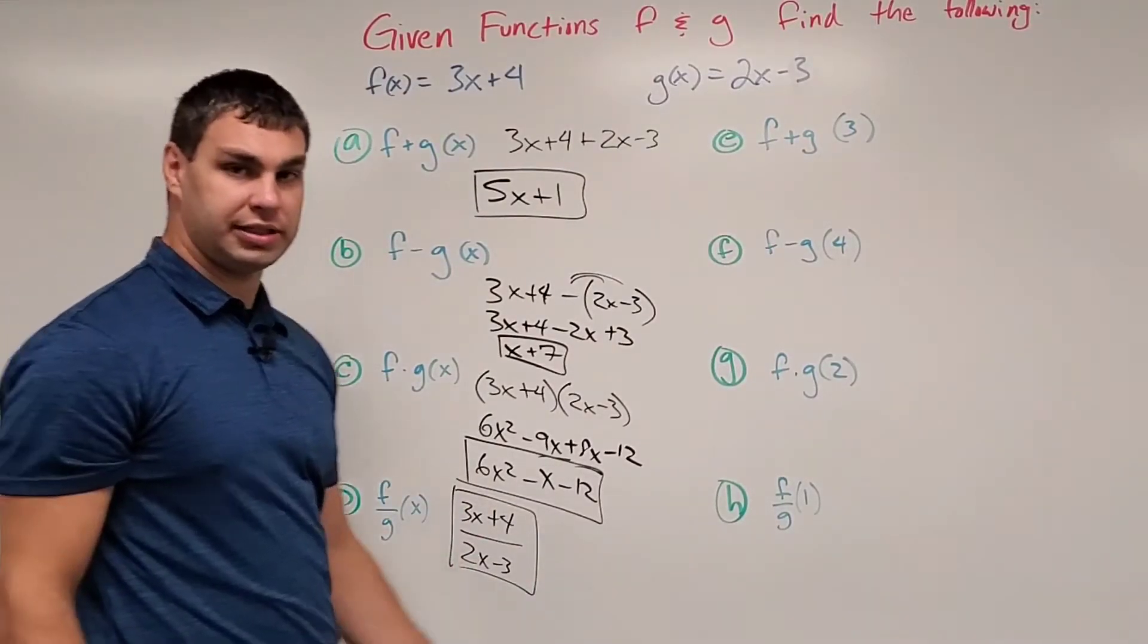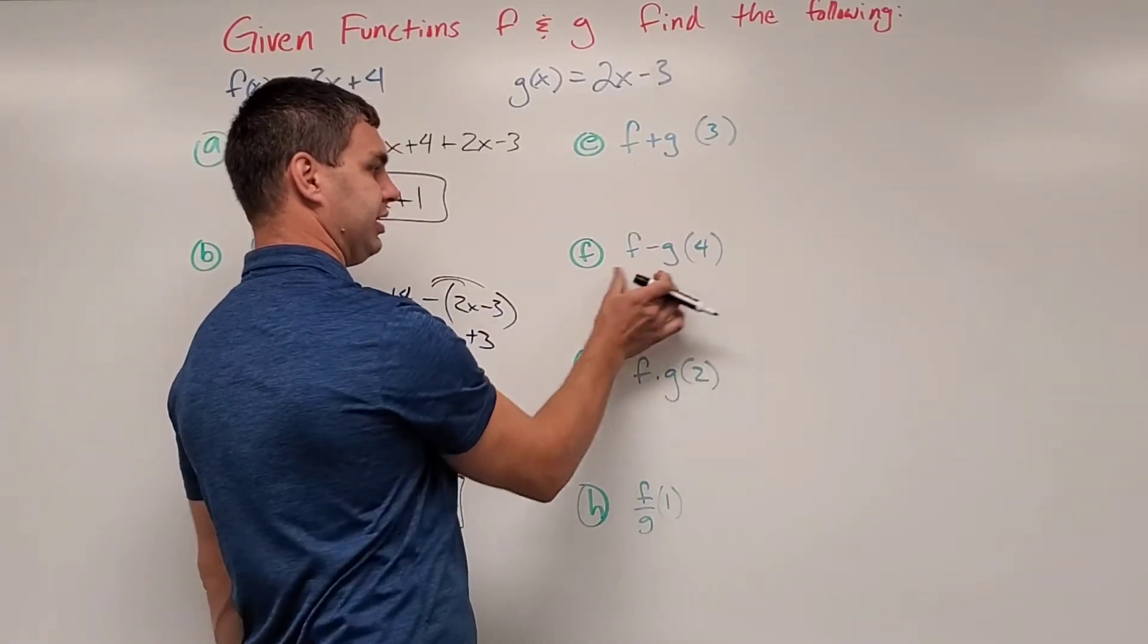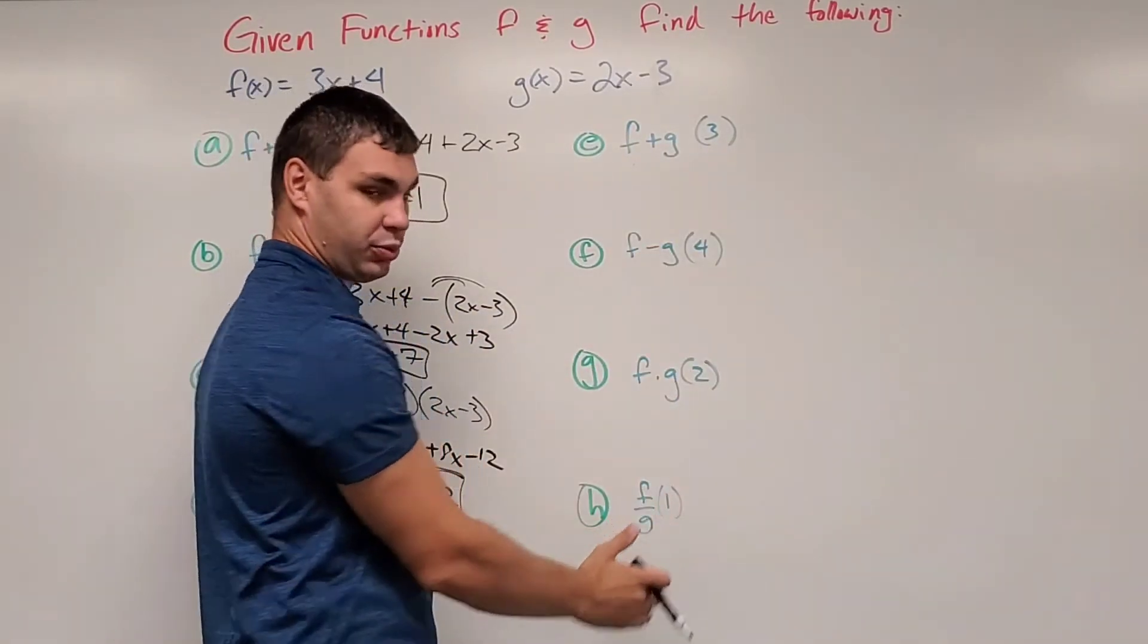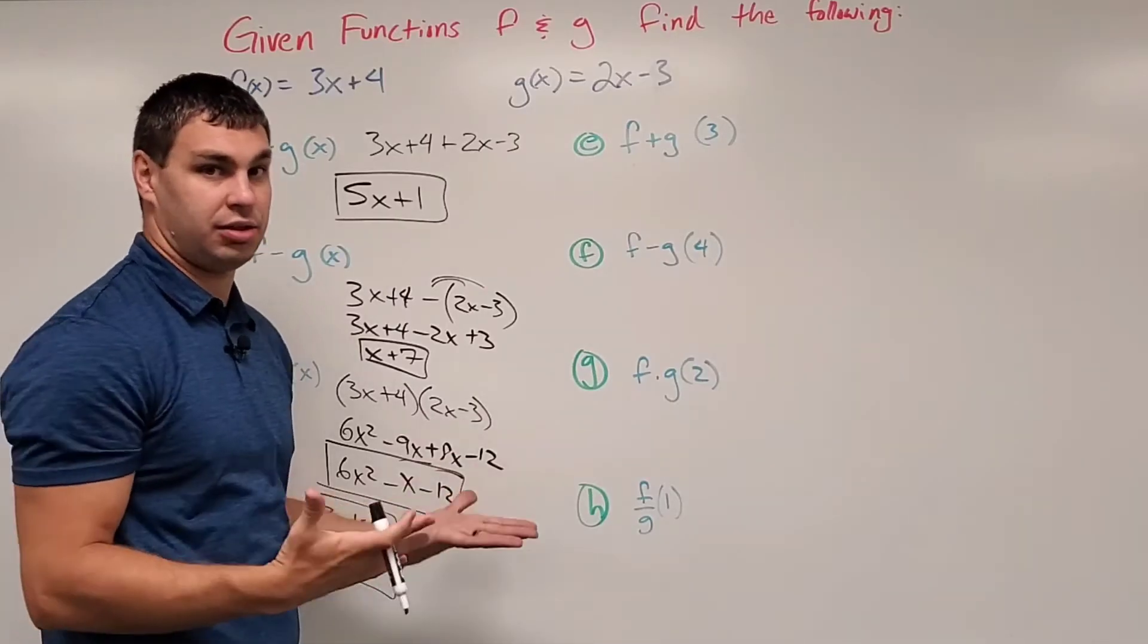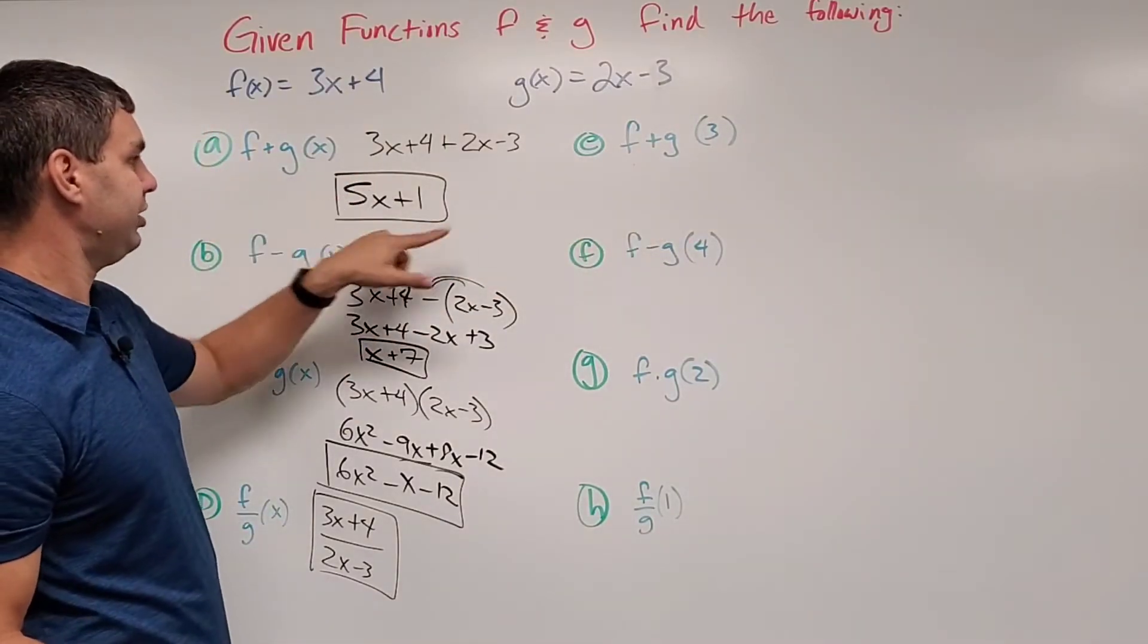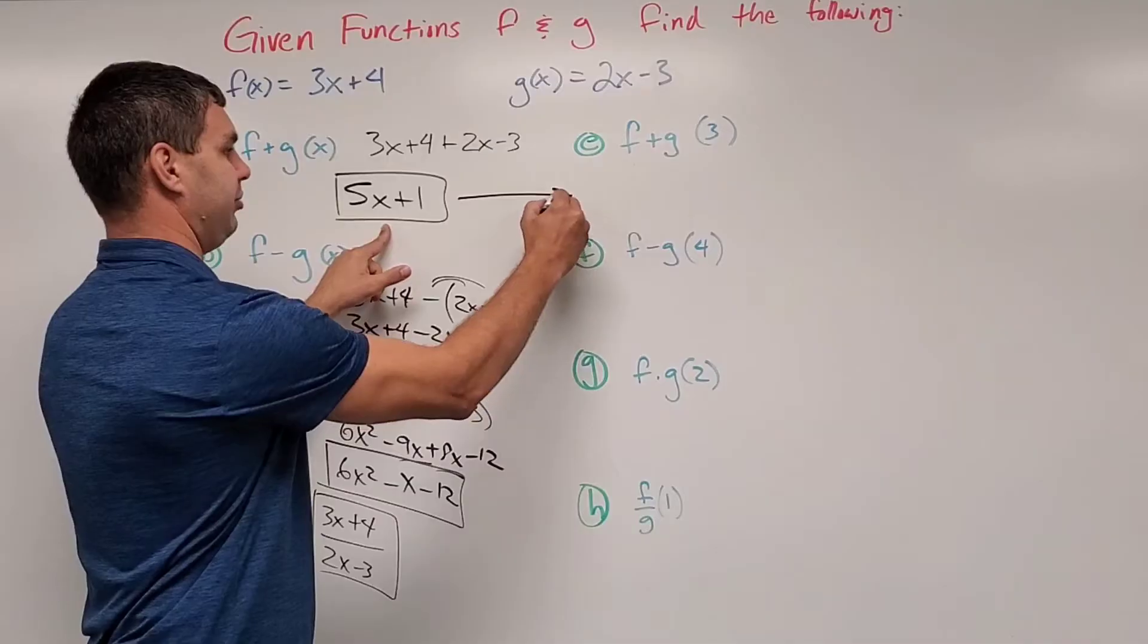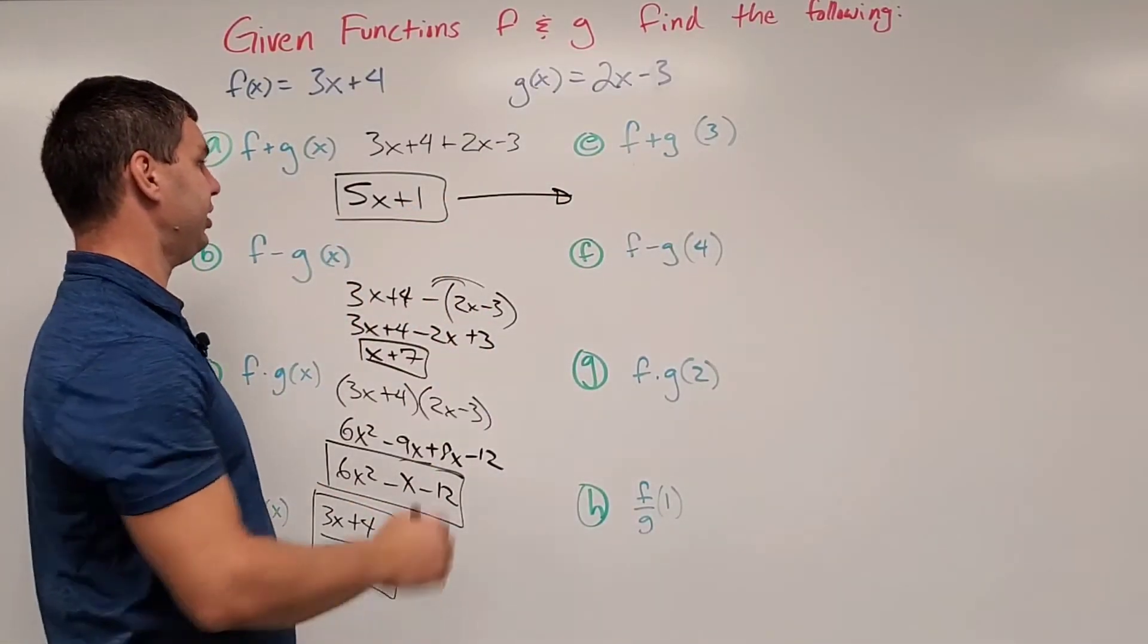Alright, now you'll notice in these next 4, f plus g of 3, this one's f minus g of 4, this one's a 2, this was a 1. We just have some numbers in here. But we've already done kind of the hard math. We've done our f plus g of x. So what I can do is now take this answer and plug in 3 for the x and that'll give me the desired outcome.